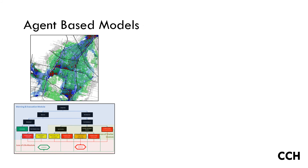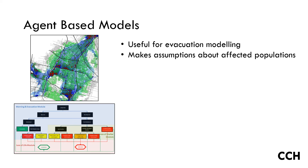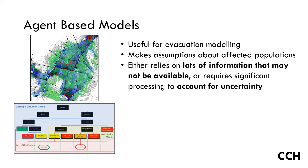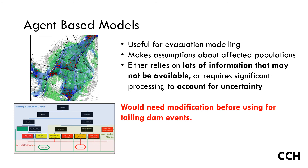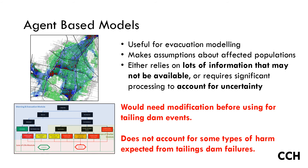Agent-based models are relatively new. They function by modeling individuals in the area and allow them to evacuate in simulated time down specified routes. They are exceptionally useful for evacuation planning since they can highlight routes and safe zones that are inappropriate. However, they do make many assumptions about the populations downstream, and they rely on a lot of information which might not be available, or they need to be run many thousands of times to account for the wide variability in population behaviors to form accurate estimates of loss of life. Again, these models need to be amended for tailings type flows, and they cannot account for other types of injury or damage that might be expected in some cases.